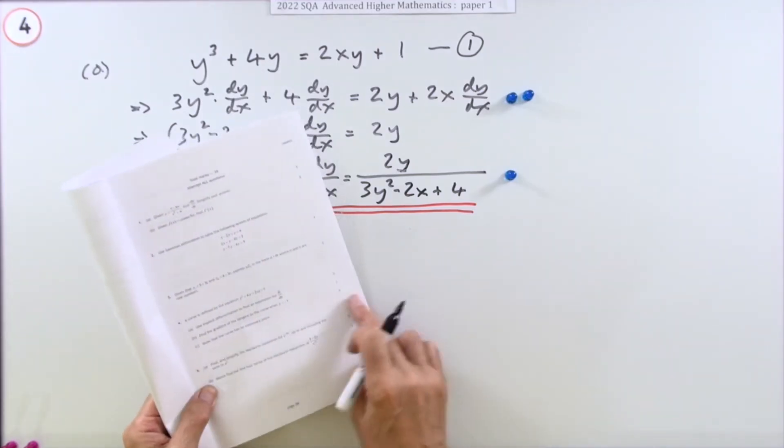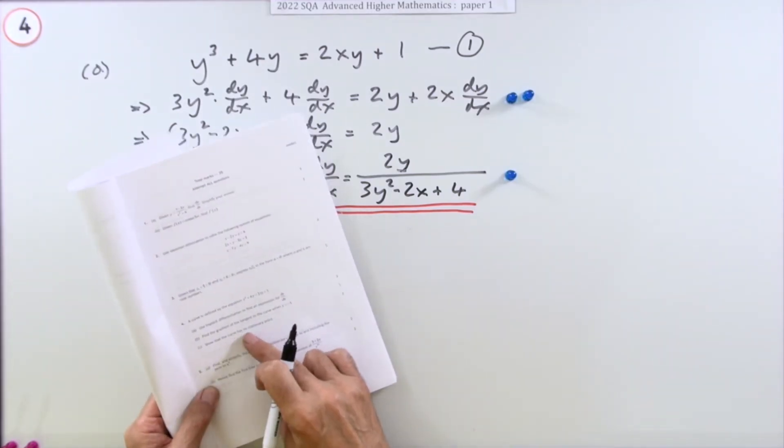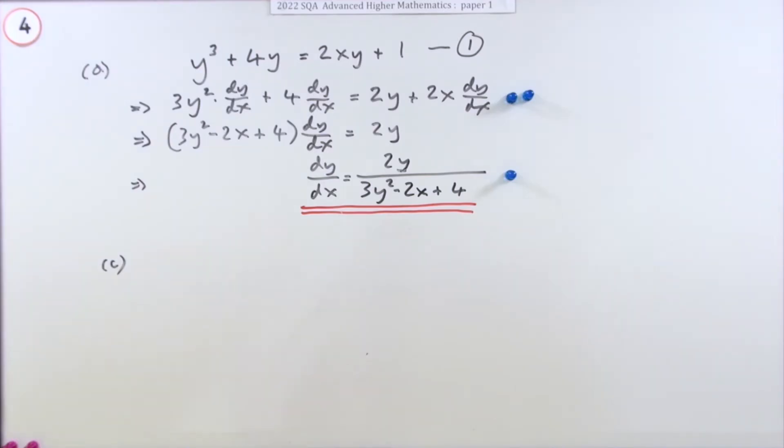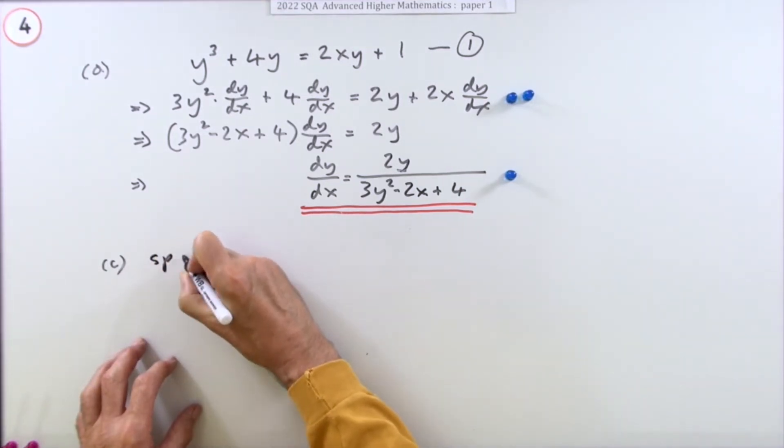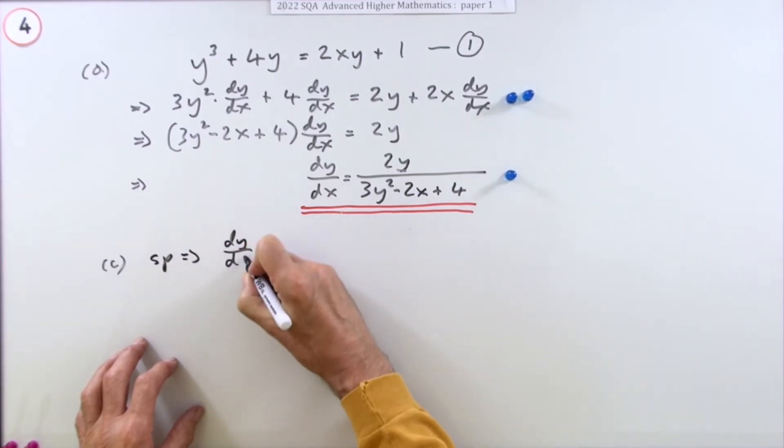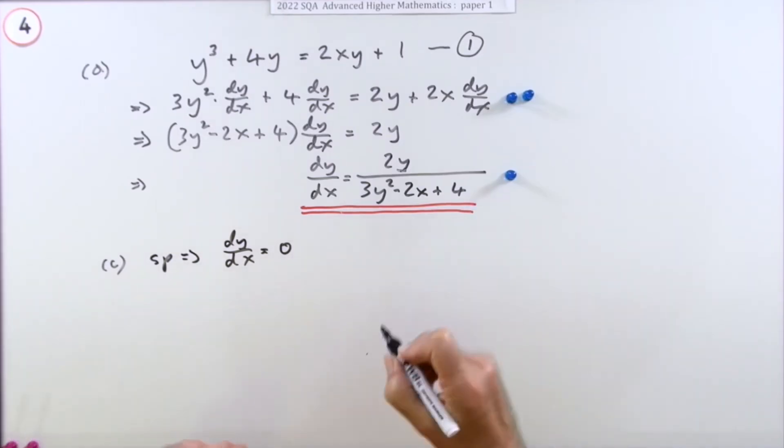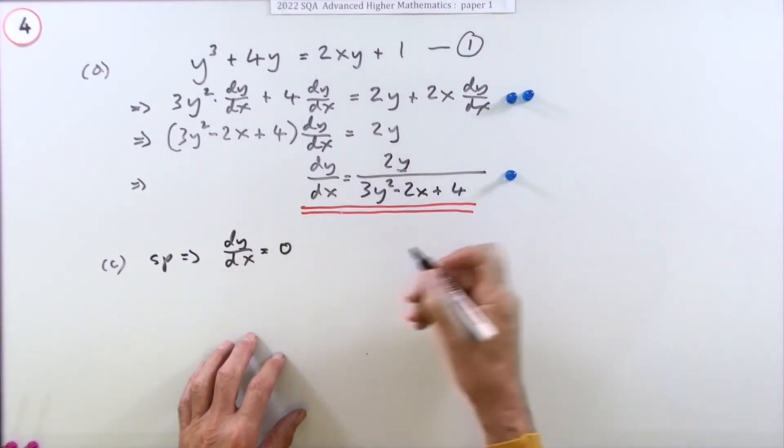Part c, for two marks: show that the curve has no stationary points. To get a stationary point, dy/dx would have to equal zero, so just start from there.